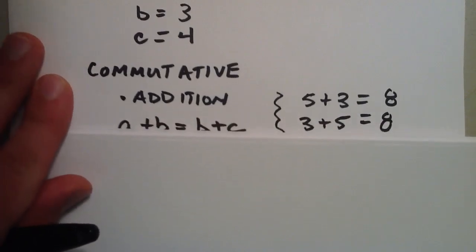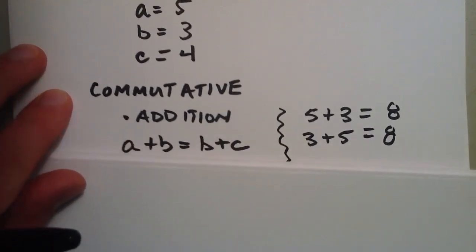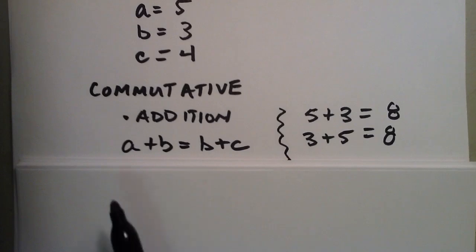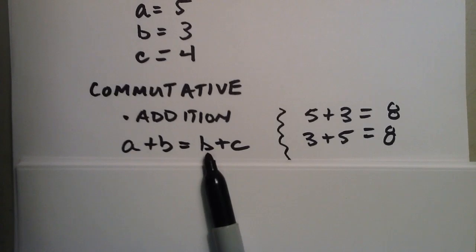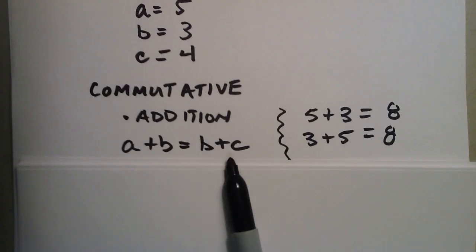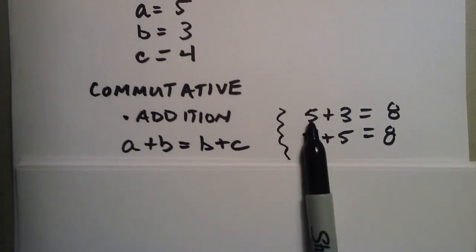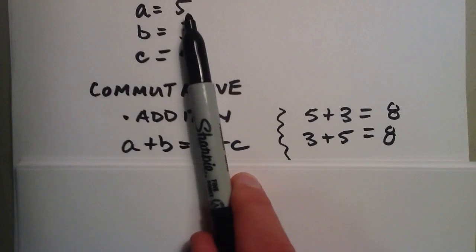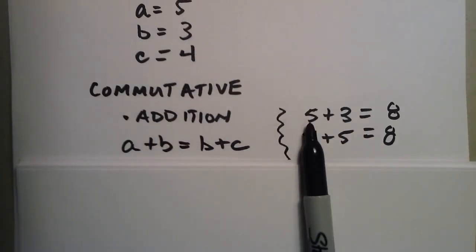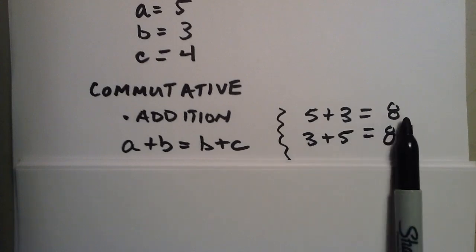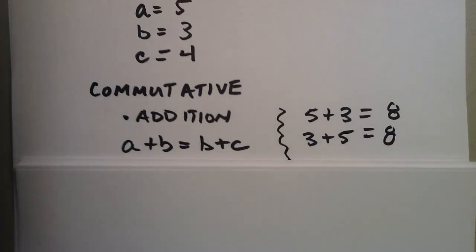So basically, the commutative property of addition says that you take two numbers, and you can add them in either order. You can have the first one, add the second one to it, you can start with the second one and add the first one to it. It doesn't really matter which order. Like I've chosen up here, 5 plus 3 represent my A and B. It doesn't matter if you say 5 plus 3 or 3 plus 5, they both equal 8. So that's essentially what the commutative property of addition says.